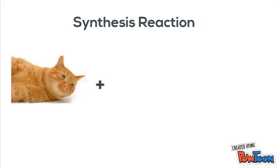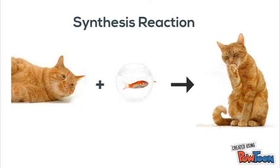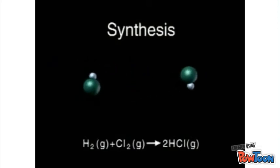If we look at an example of this, we have hungry cat plus a goldfish yields a product of a cat that's no longer hungry. A chemical example of this is a hydrogen and a chlorine molecule coming together and creating two molecules of hydrochloric acid.